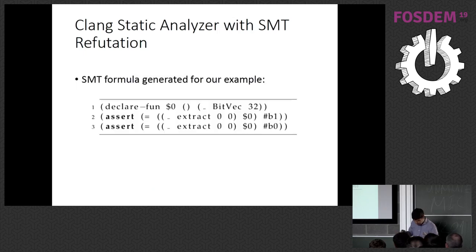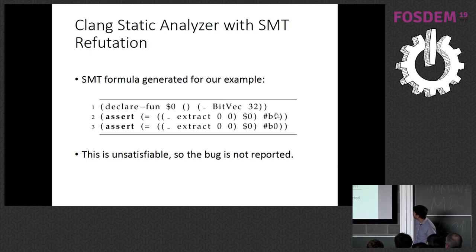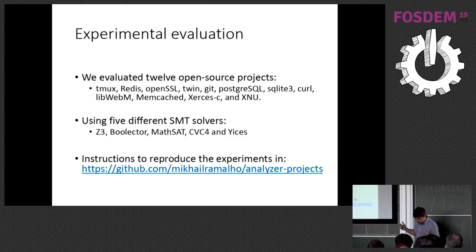Here's the SMT formula for that first example program. The variable 'a' is converted to a symbolic variable. The formula checks: get bit 0 of the variable and it should be one, AND get bit 0 of the variable and it should be zero. This is a contradiction for a binary variable — unsatisfiable. So the more precise analysis correctly does not report the bug.